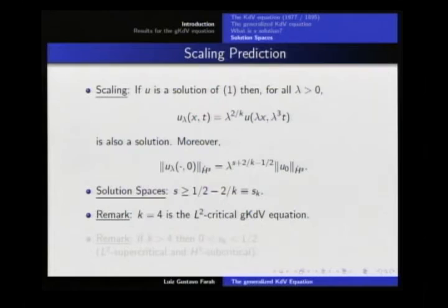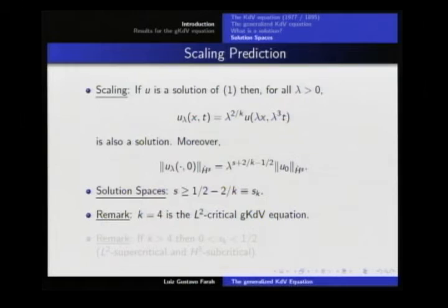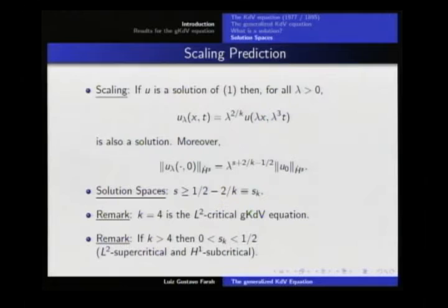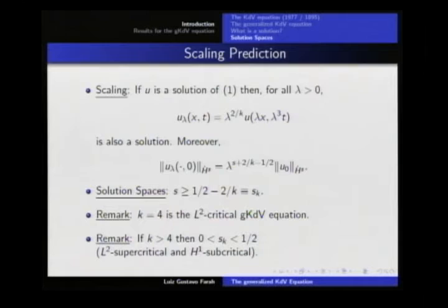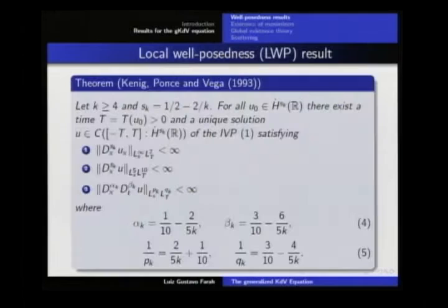Two remarks: first, take K equal 4 — we have one half minus one half, which is 0. So we are in H^0, and H^0 is L^2. That is why K equal 4 is the L^2-critical gKdV equation. Also note that if K is bigger than 4, then s_K is always between 0 and one half, meaning we are always in the L^2 supercritical and H^1 subcritical case.